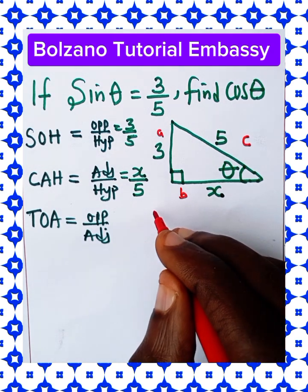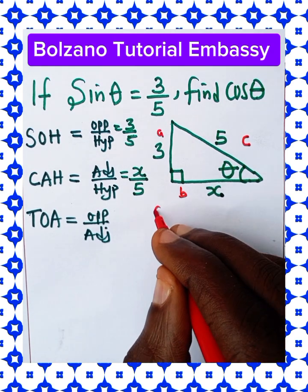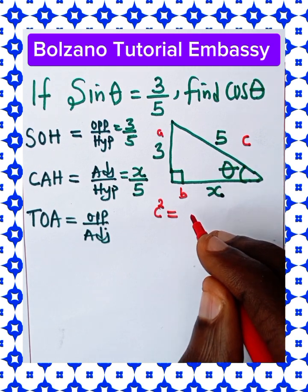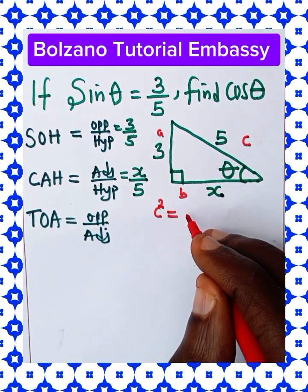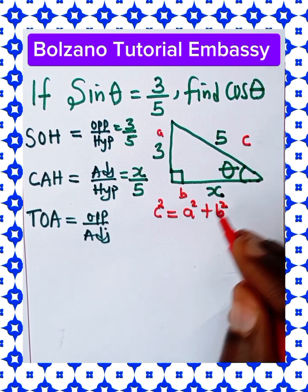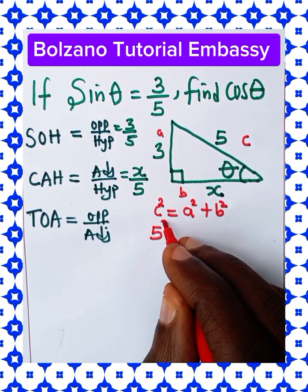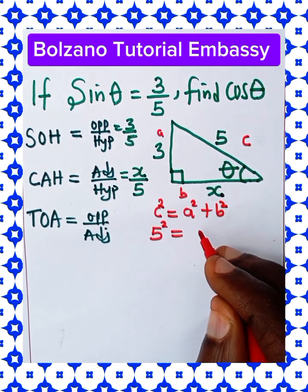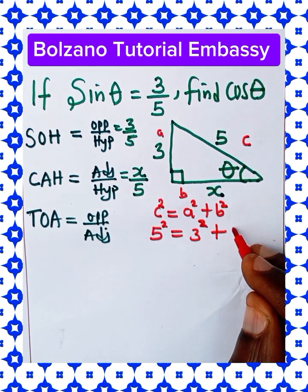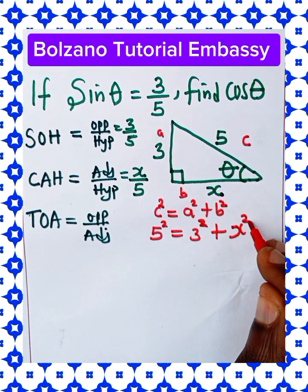From Pythagoras' rule, the square of the hypotenuse side is equal to the sum of the squares of the two other sides, a squared plus b squared. So c is 5 squared, a is 3 squared, plus b, which we'll represent with x squared.